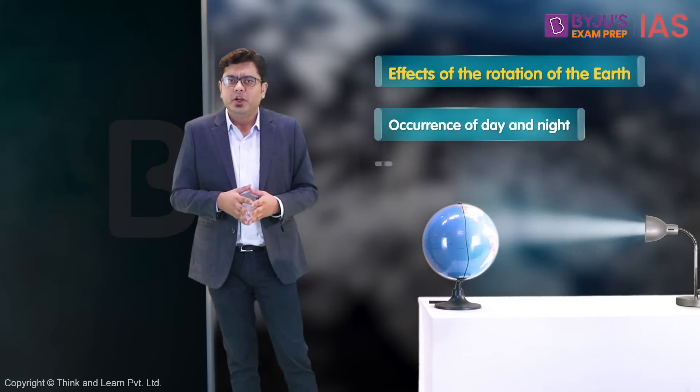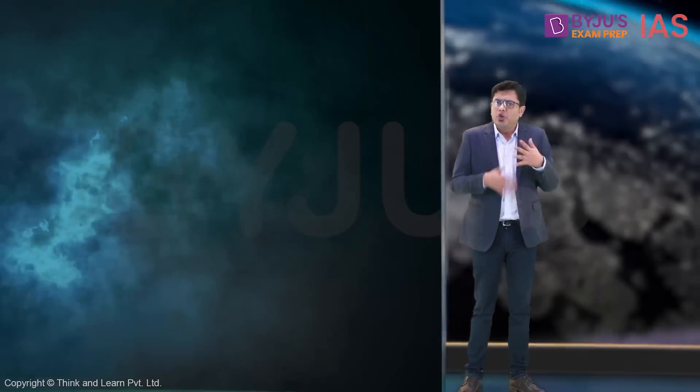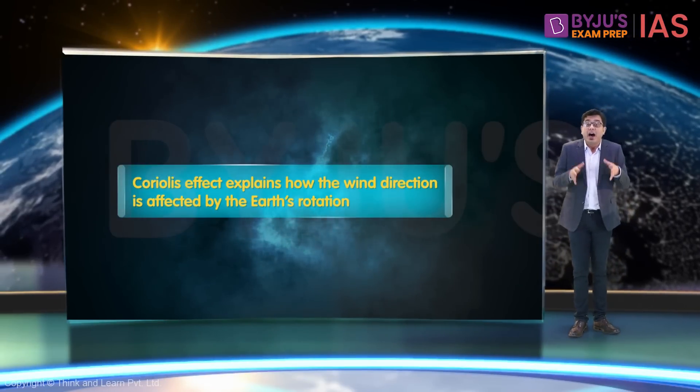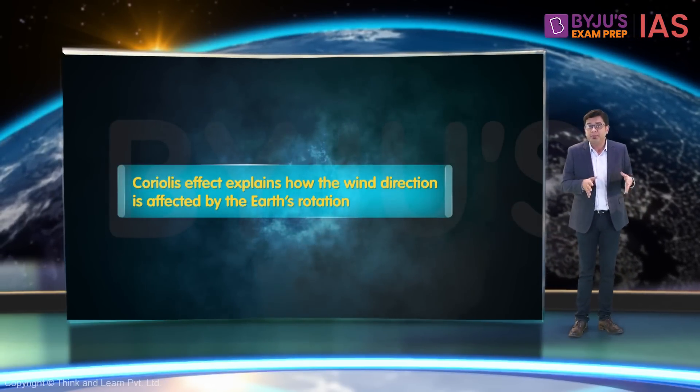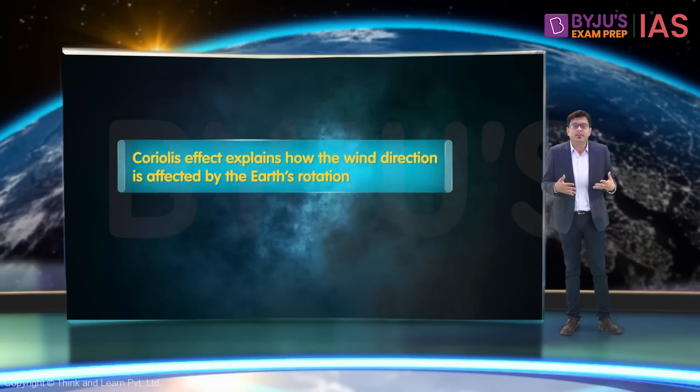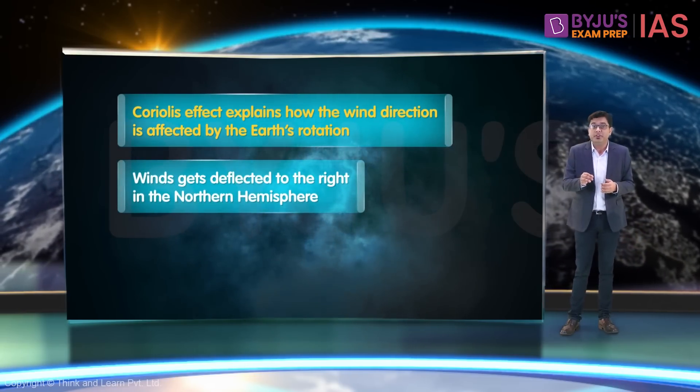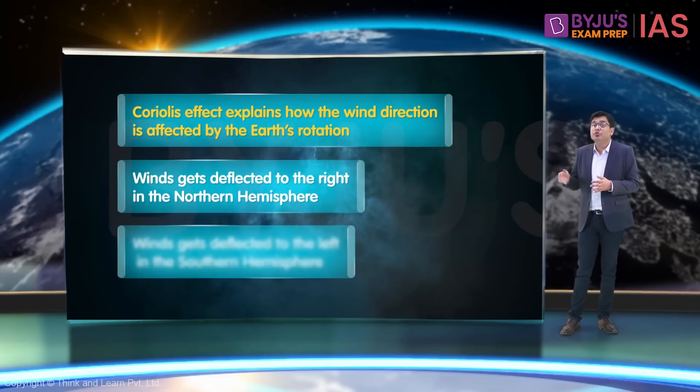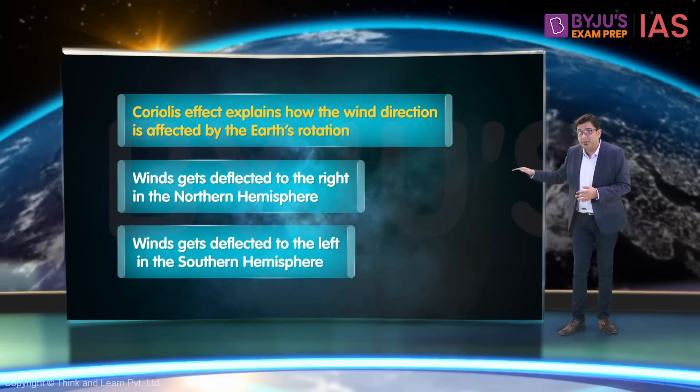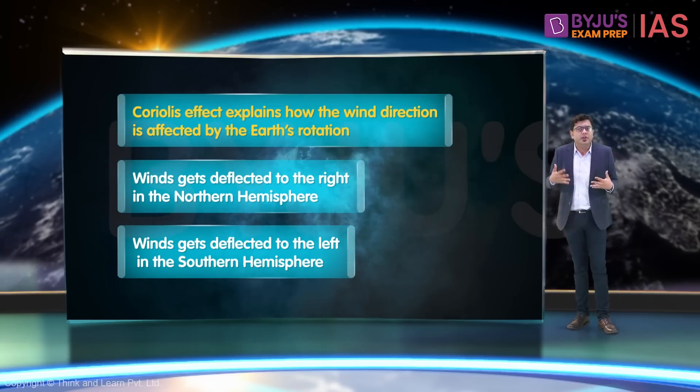Now, the rotation of earth also causes the Coriolis effect. The Coriolis effect explains how the wind direction is affected by the earth's rotation. Due to the rotation of the earth, the winds get deflected to the right in the northern hemisphere and to the left in the southern hemisphere. But how does the rotation of the earth deflect the winds? Let's understand this with the help of an example.